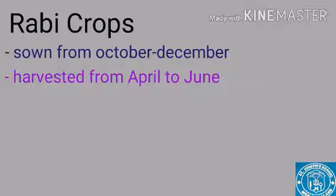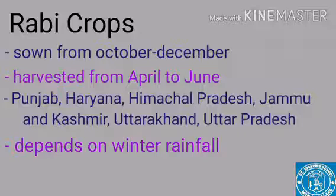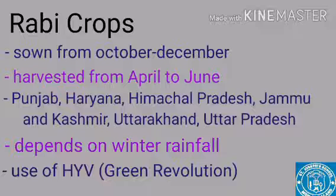Important areas for Rabi crops are Punjab, Haryana, Himachal Pradesh, Jammu and Kashmir, Uttarakhand, and Uttar Pradesh. These crops depend on winter rainfall for their growth. In the 1960s, a movement was launched to promote the use of high-yielding variety seeds (HYV) and increase the use of fertilizers and irrigation. This movement is called the Green Revolution of India, which played a very important role in the growth of Rabi crops in Punjab, Haryana, Western UP, and parts of Rajasthan.